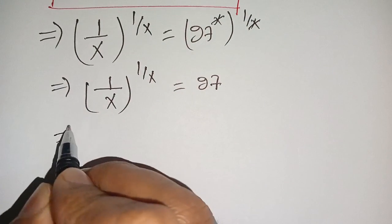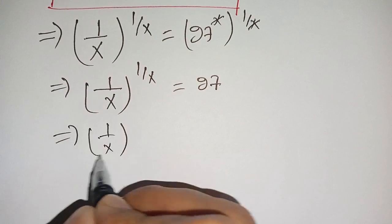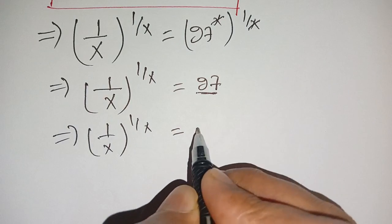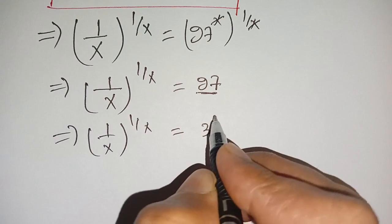Now we can write this as 1 divided by x whole power 1 divided by x is equal to 3 power 3.